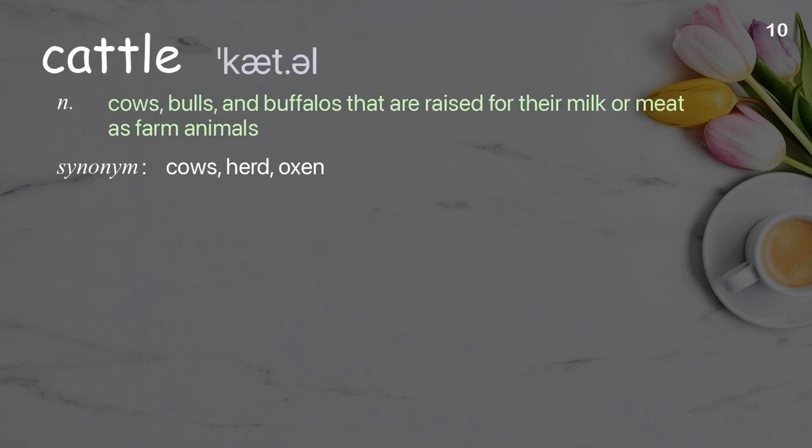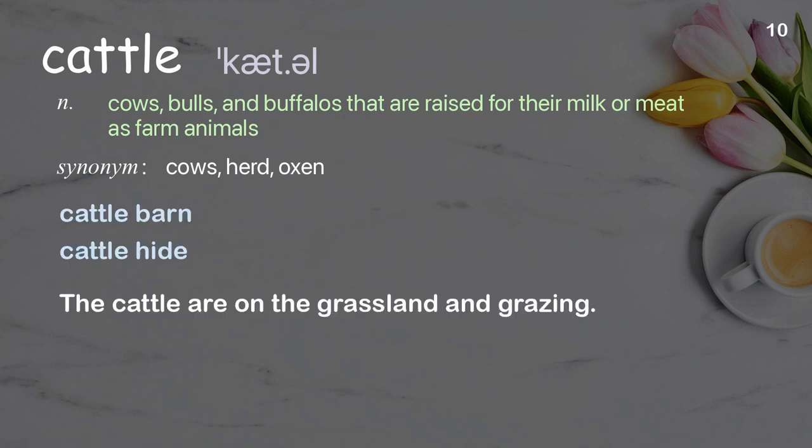Cattle. Cows, bulls, and buffaloes that are raised for their milk or meat as farm animals. Examples: cattle barn, cattle hide. The cattle are on the grassland and grazing.